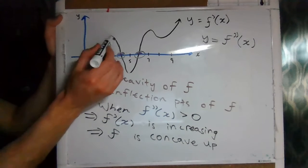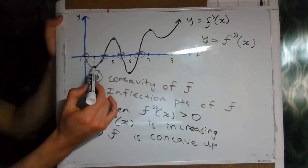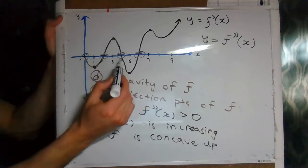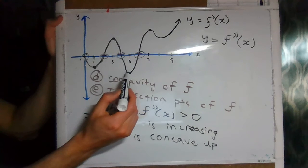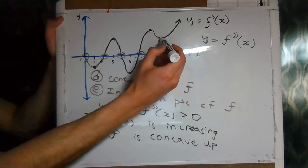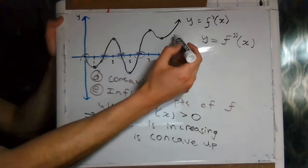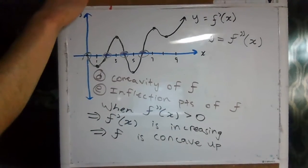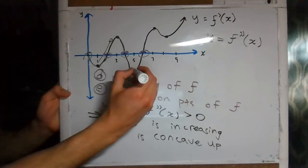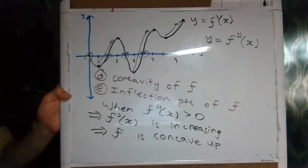So where is the first derivative increasing? Here's a picture of the graph. First it starts going down — that's decreasing — and then when we hit this point it starts going up all the way until this point. So all through this interval the first derivative is increasing; that's where f is concave up. From x equals 1 to x equals 3 the first derivative is increasing, then it's decreasing from 3 to 5, then increasing from x equals 5 to x equals 7, then decreasing from 7 to 8, and then increasing from 8 to 9. So all the points of increase of the first derivative are those intervals.